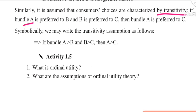Symbolically, we may write the transitivity assumption as follows: if bundle A is more preferred than B, and B is more preferred than C, then A is more preferred than C.